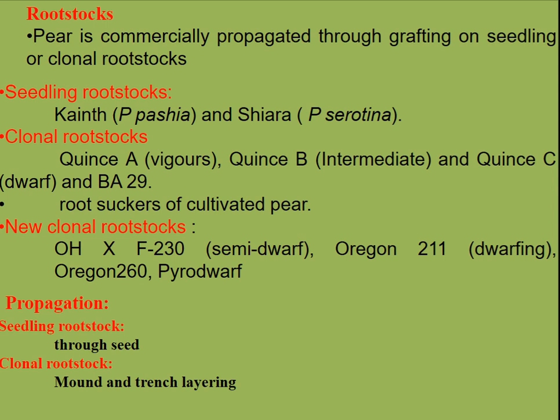Pear is commercially propagated through grafting using seedling or clonal rootstocks. Seedling rootstocks are Kainth and Shiara. Clonal rootstocks are Quince A (vigorous), Quince B (intermediate), and Quince C (dwarfing). New clonal rootstocks include OH×F 513 (semi-dwarfing), Oregon 211 (dwarfing), and Oregon 260 (pear dorf rootstock). Seedling rootstock propagation is done through seeds and clonal rootstock propagation is done through mound or trench layering.